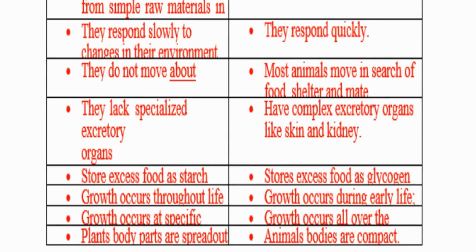Difference on growth: in plants, growth occurs throughout life at specific growing points, while in animals, growth occurs all over the body during early life. Finally, plant body parts are spread out, while animal bodies are compact.